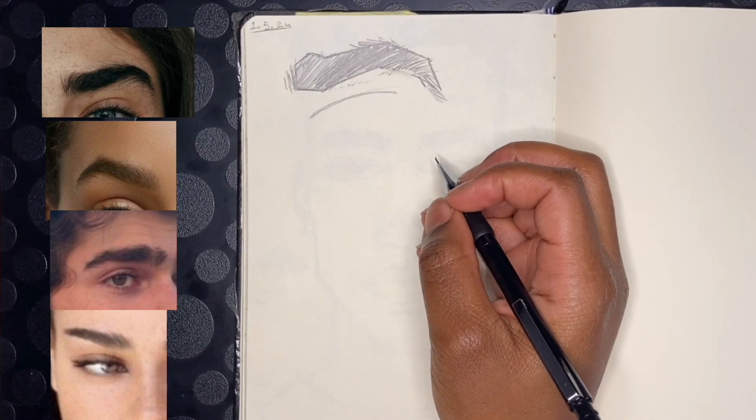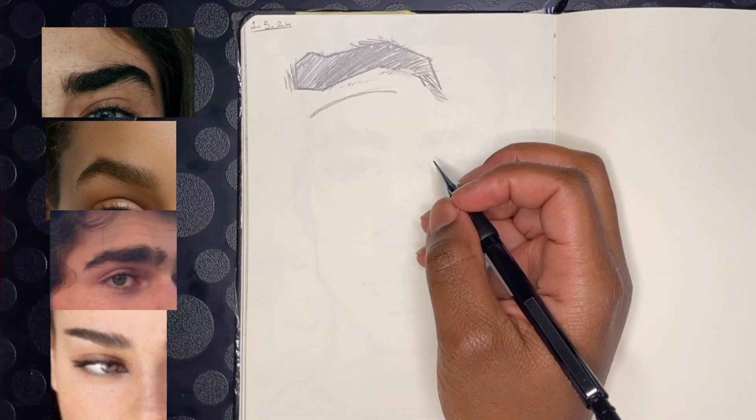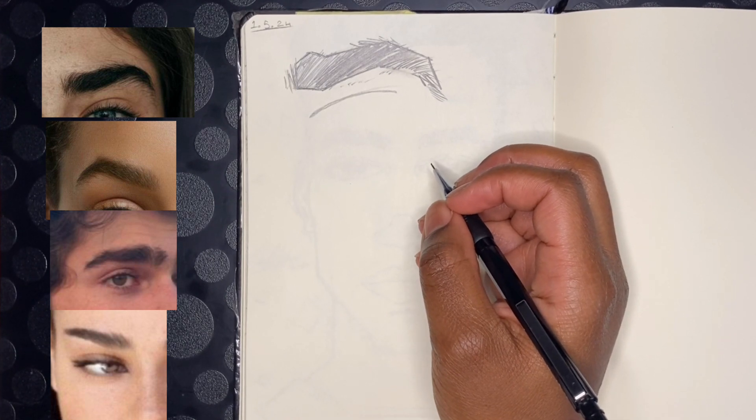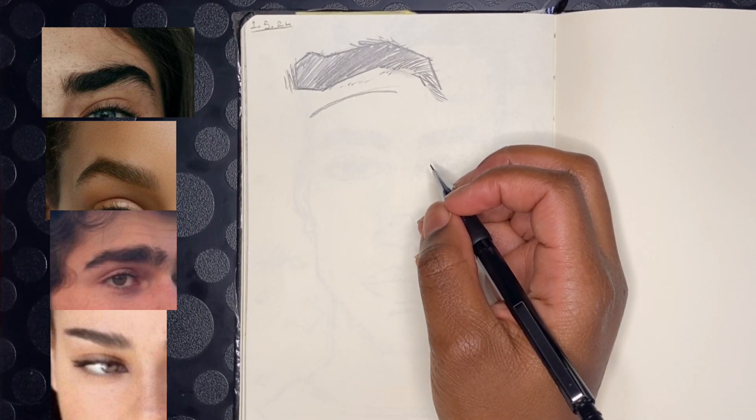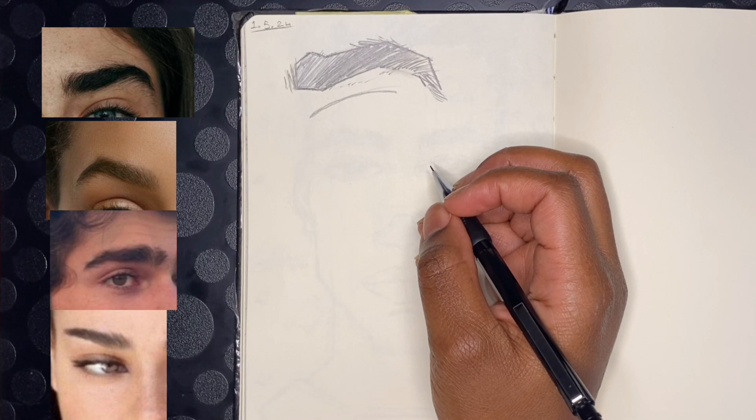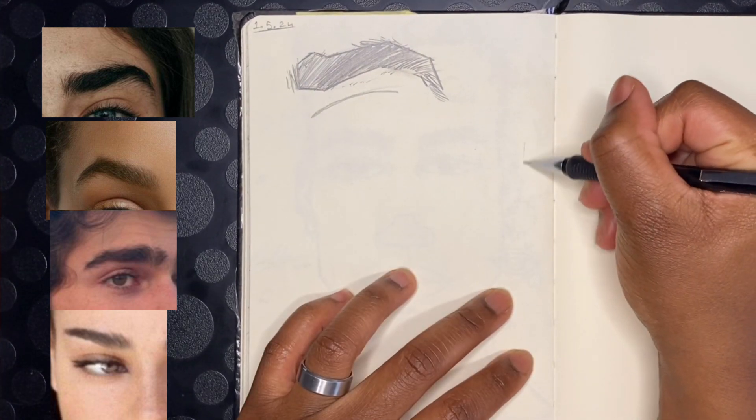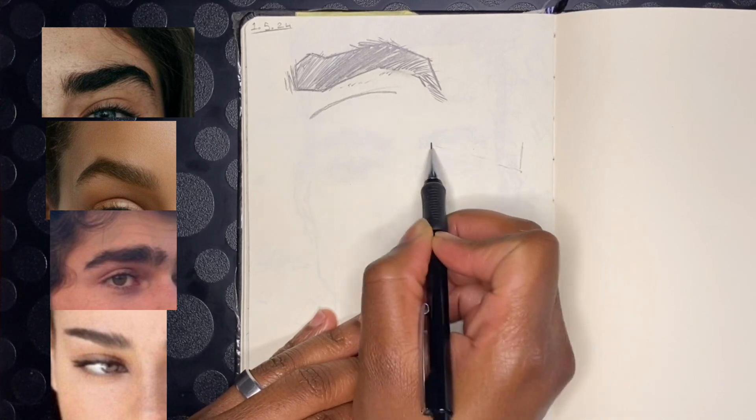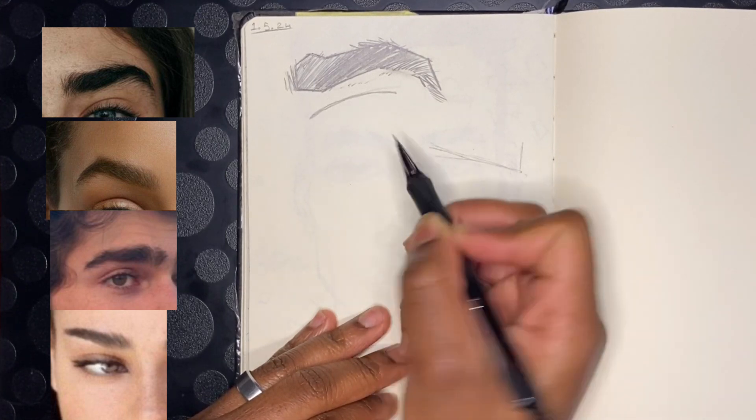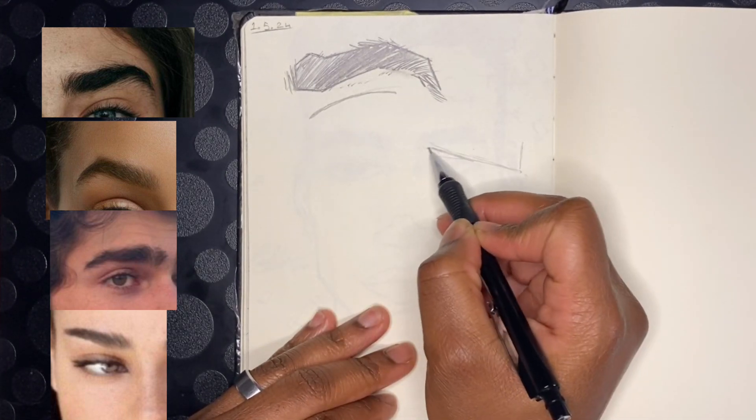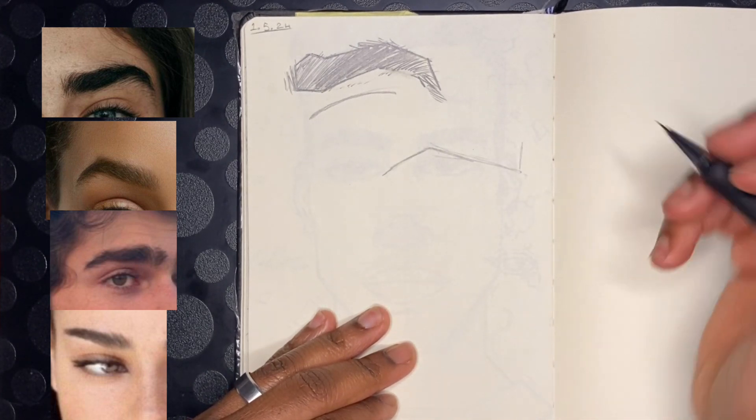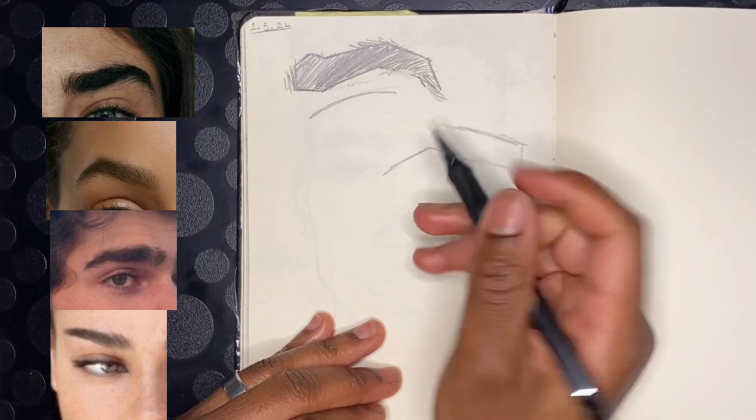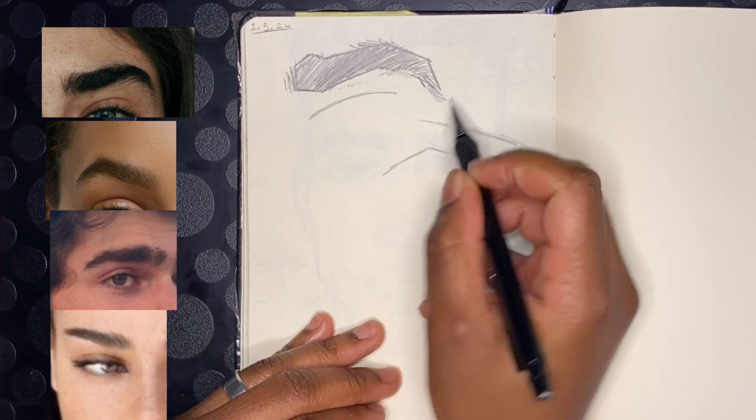First eyebrow, that took what, three minutes? On to the next eyebrows. My favorite thing to do is do sharp eyebrows. So we're going to try and find a sharp one. Again, we're going to just do the outline. And it's good to practice doing eyebrows in different directions as well so you don't get comfortable drawing in one direction. And then we're going to go and do a three-on-one after. I don't want this to be a long video either, that's why I'm kind of going quick.